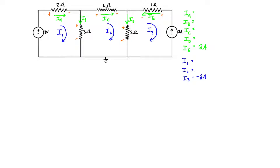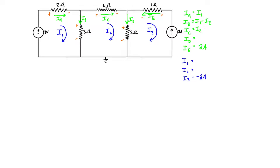For ia, the mesh current passes through that resistor from left to right, so ia equals i1. Similarly, ic equals i2. For ib, we have i1 going down and i2 going up, so the net current is ib equals i1 minus i2. For the 2-ohm resistor, we have i2 coming down and i3 going up, with the net direction downward, so id equals i2 minus i3.